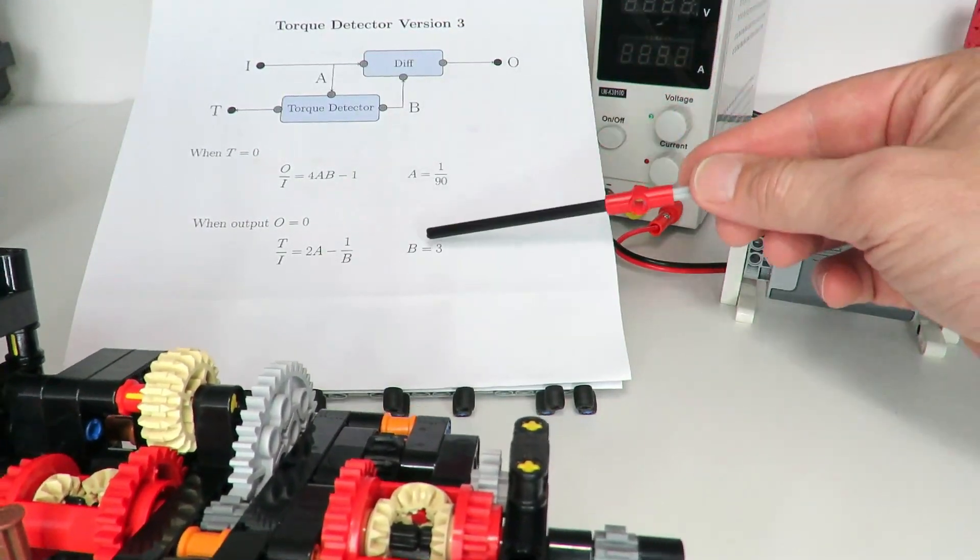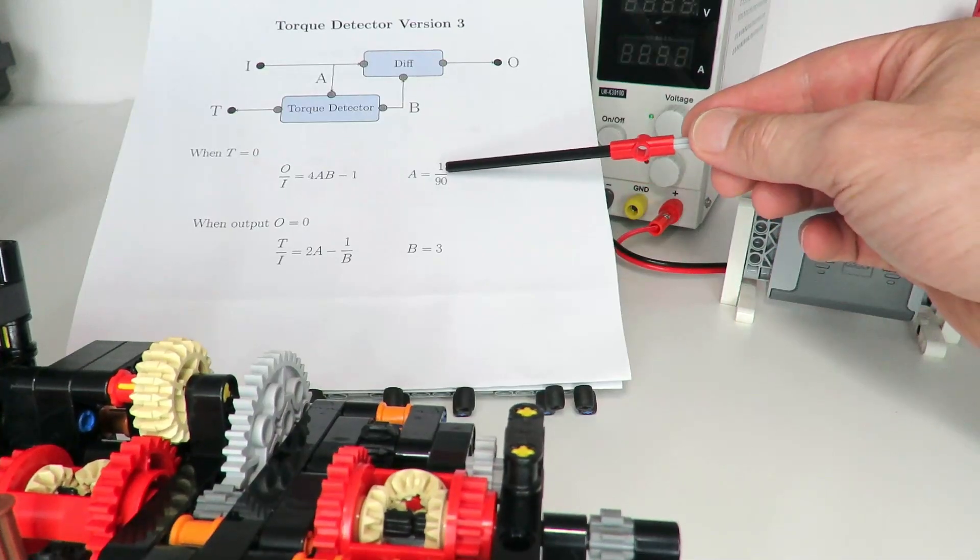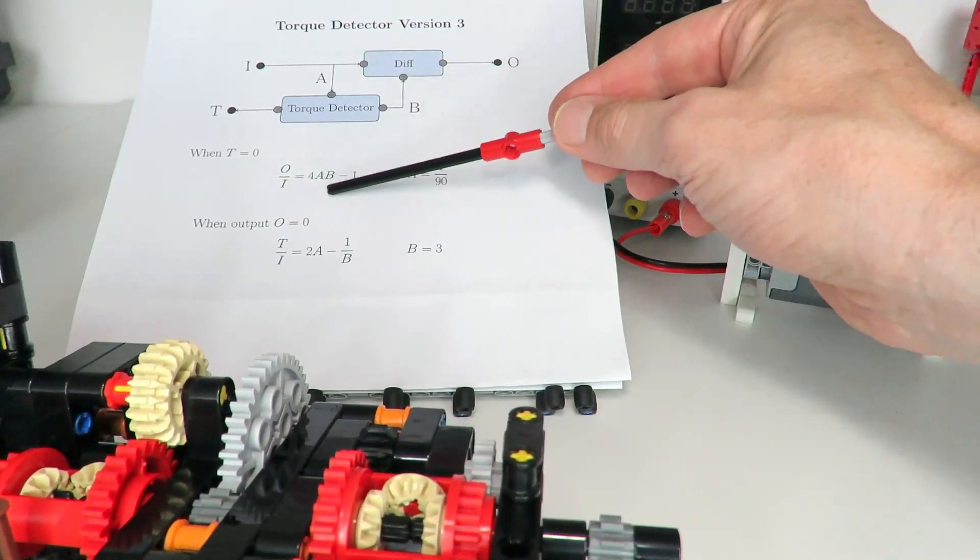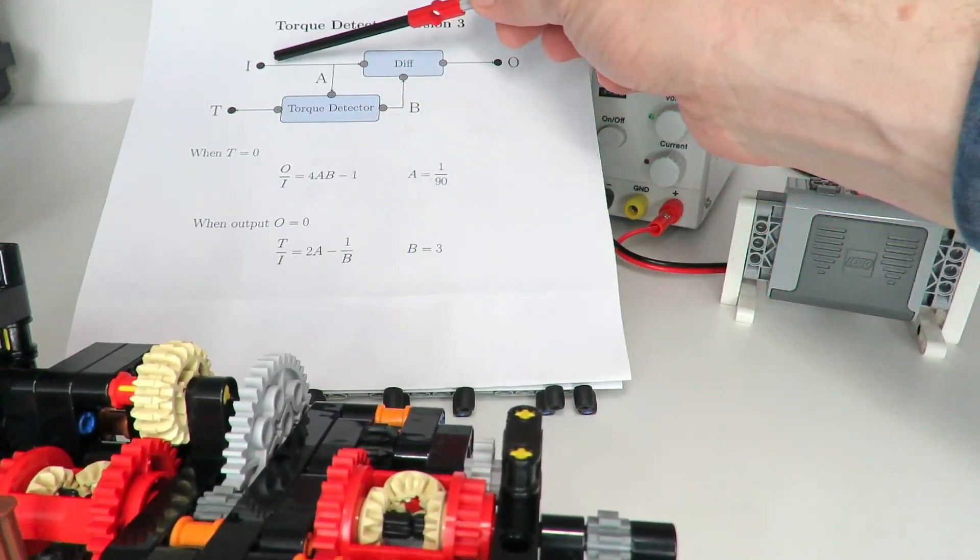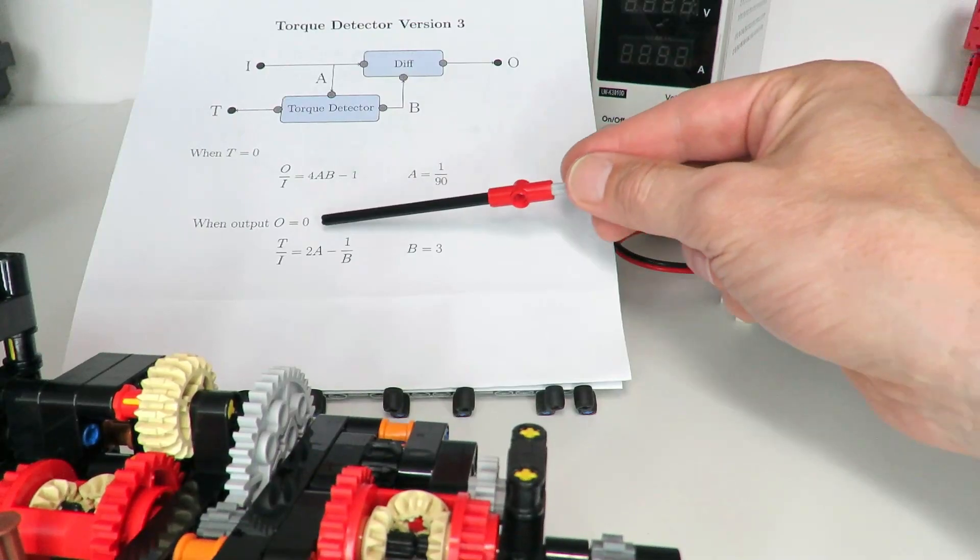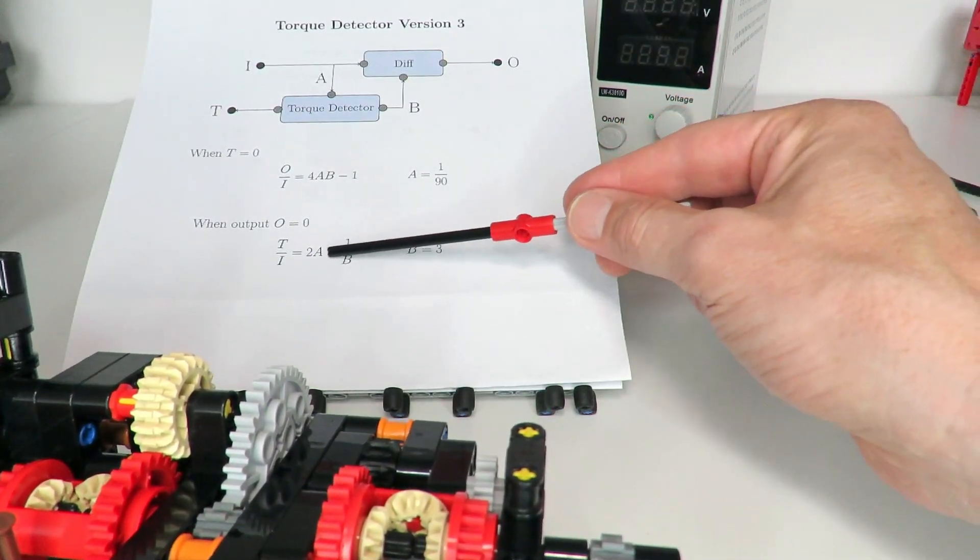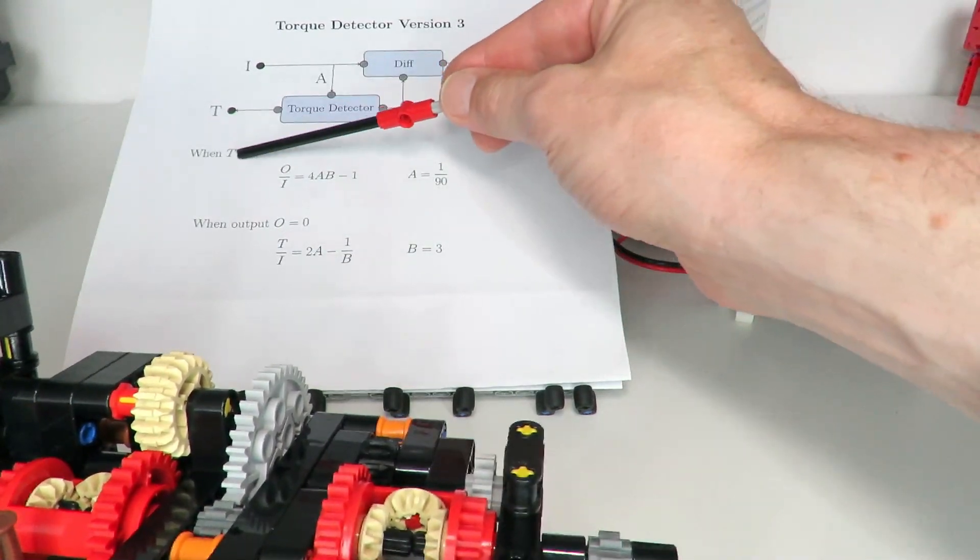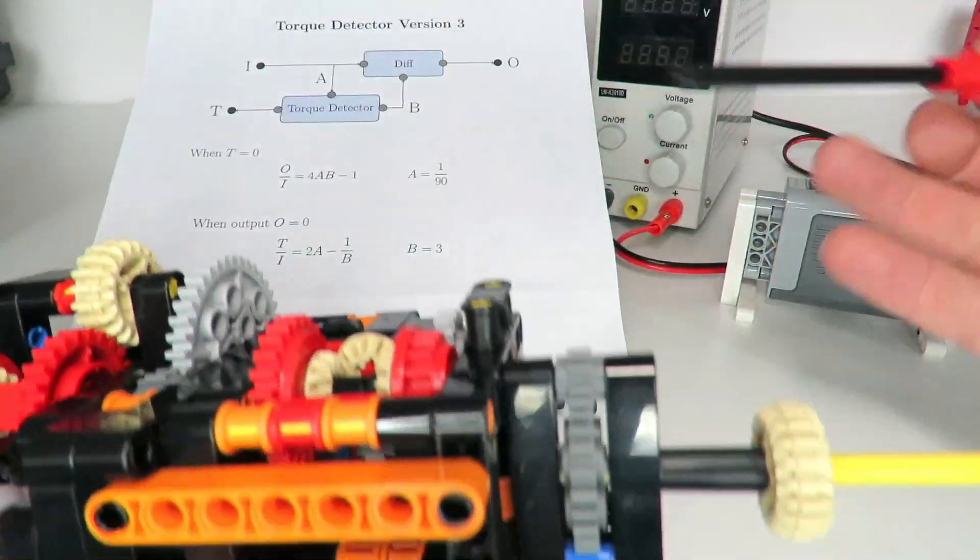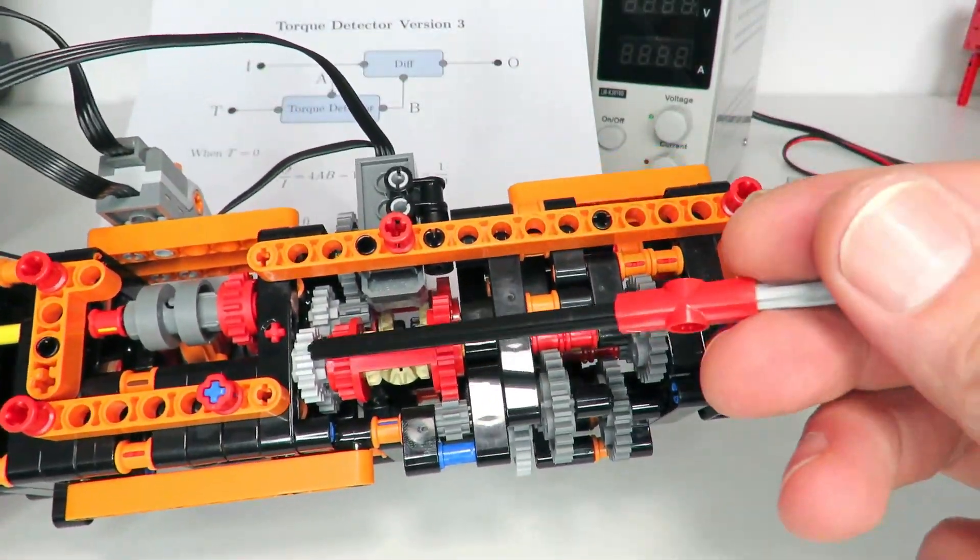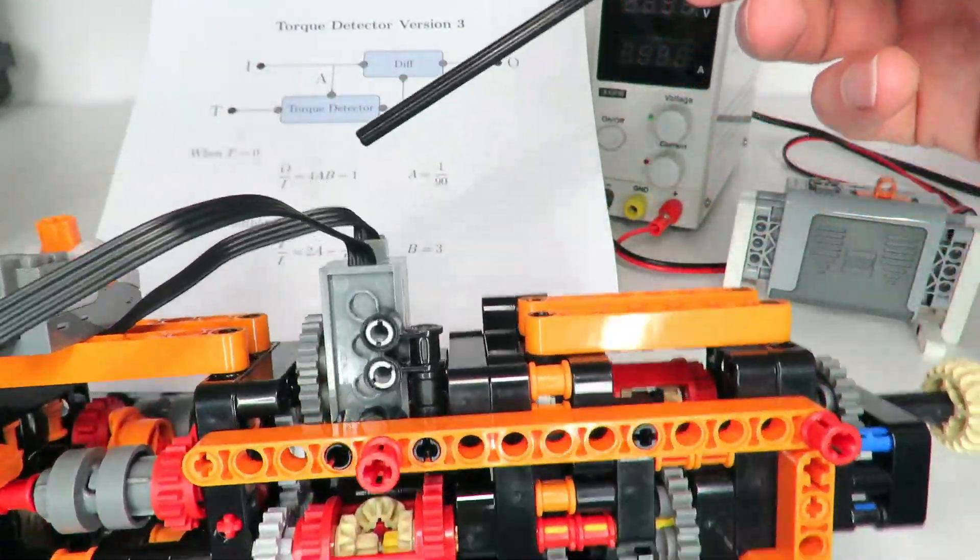What I've done in this case is I've chosen A of one ninetieth and B equal to three, and that gives us that overall ratio between here and here is 4 times 1/90 minus 1, so pretty close to one across this path. Then when there's high load on the output, 2/90 is very small so we end up with about one third for the ratio between the torque detecting ratio to the input. So this torque detector differential here, the output rotates at about one third of the speed of the input to drive the orange rotary catch for the gear changing.